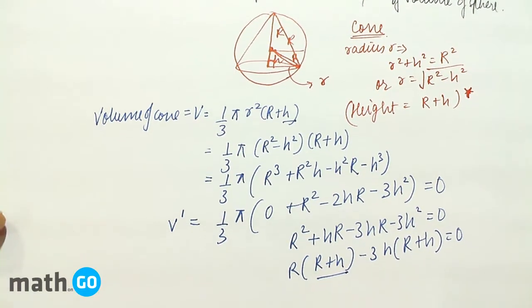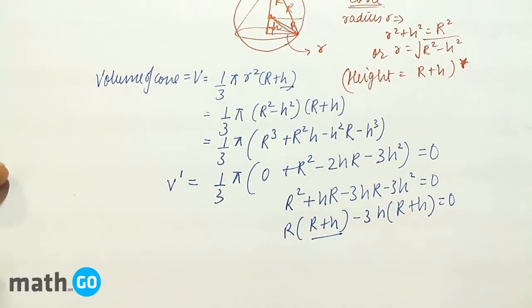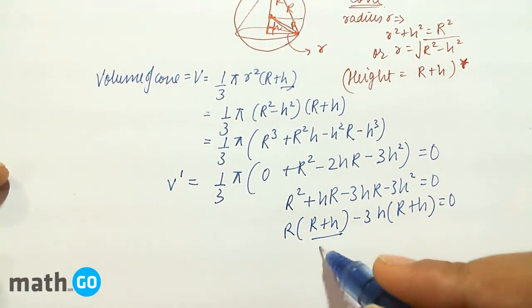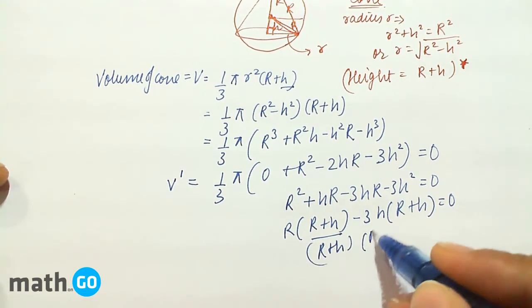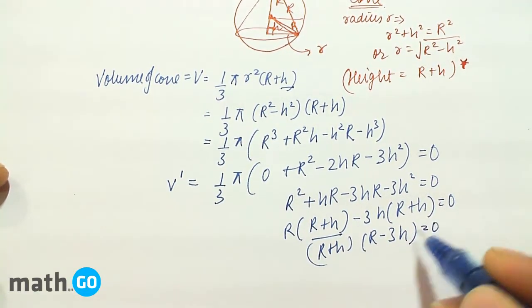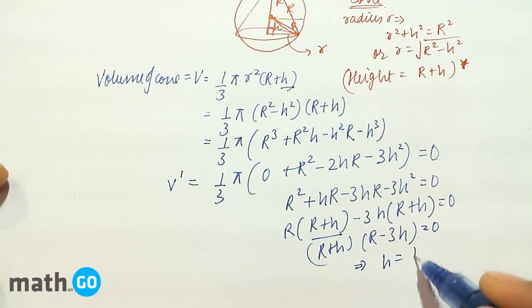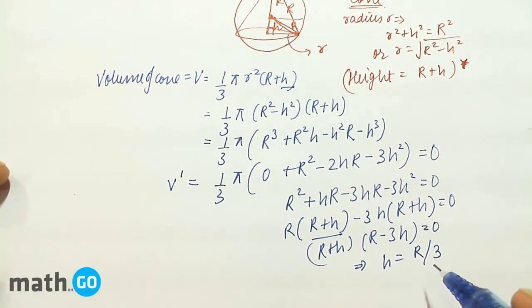R(R + h) - 3h(R + h) = 0. (R + h)(R - 3h) = 0. R + h can never be 0. Obviously, the radius and the height both are positive. So R - 3h is obviously equal to 0. This gives h equals to R/3.